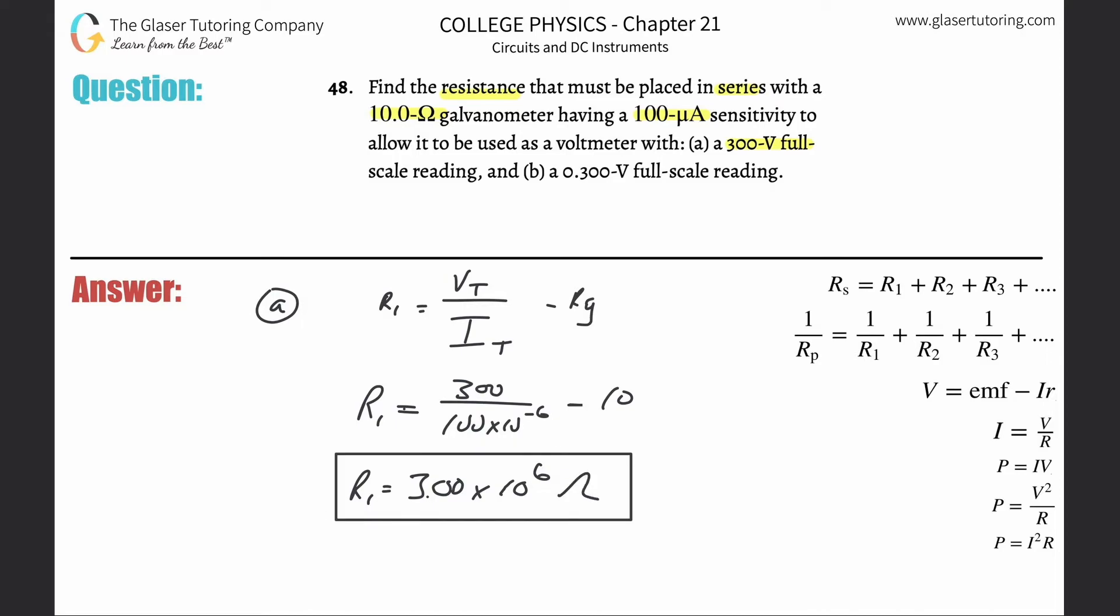Now for letter b, it's asking for a 0.3 voltage full scale reading. So the only thing that's going to change is instead of this being 300, it's now going to be 0.3. Just redo the calculation.